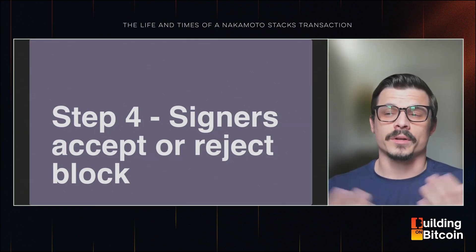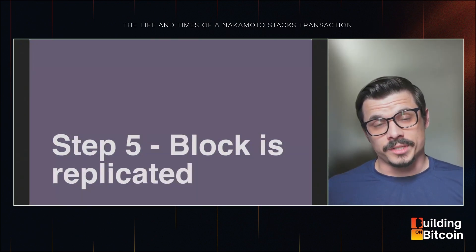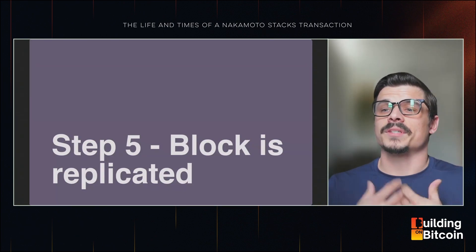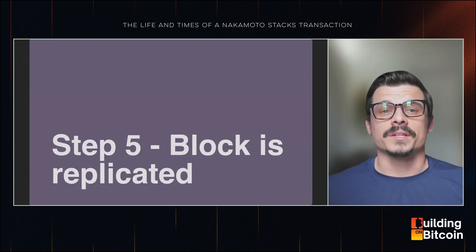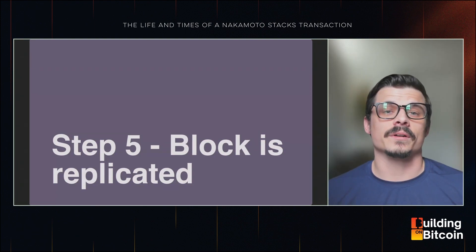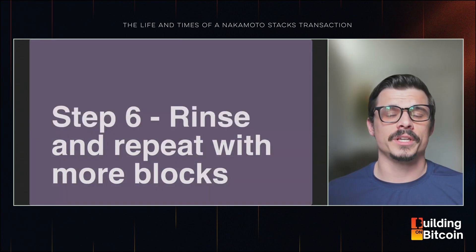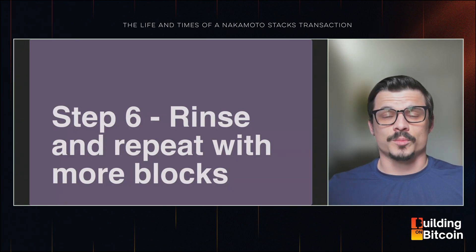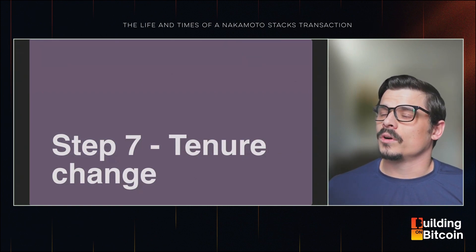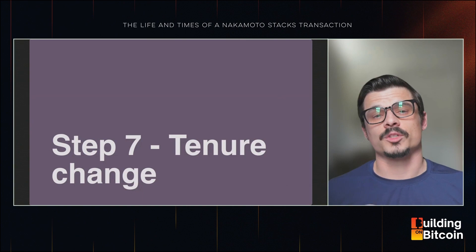By creating this cooperative relationship, we can have fast blocks while actually improving the security of the whole block production process, because both miners and signers are economically incentivized to do their job faithfully. Once signers reach 70% agreement, the blocks are replicated to the rest of the network. At this point our transaction can be considered settled and confirmed on the Stacks side — a process that takes roughly five to ten seconds — and then the process repeats throughout the miner's tenure, leading us to step seven: the tenure change.